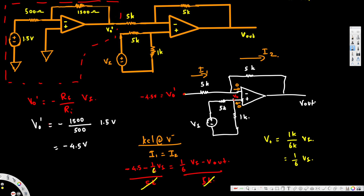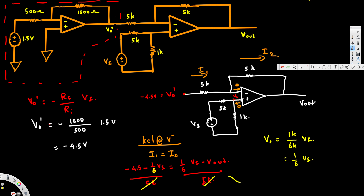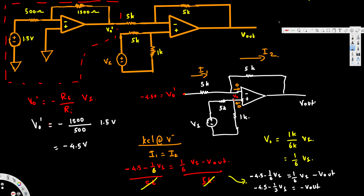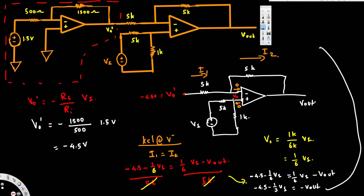Continuing from the equation: negative 4.5 minus (1/6) Vs = (1/6) Vs minus Vout. Moving (1/6) Vs to the left side gives negative 4.5 minus (2/6) Vs, and since 2/6 = 1/3, we have negative 4.5 minus (1/3) Vs = negative Vout. Multiplying everything by negative one, Vout = 4.5 plus (1/3) Vs. That is the final answer for Vout.